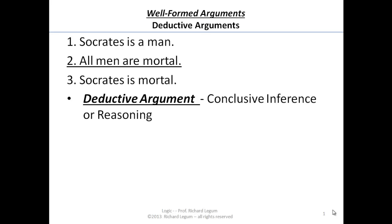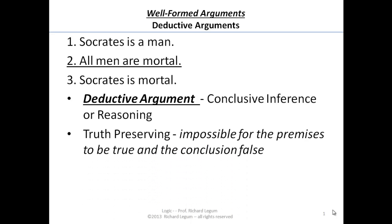Now, don't get confused by the fact that those two sentences happen to be factual. It doesn't matter if they're true or not true, if they're factual or not factual. We're talking about the conclusive connection between those two premises and that conclusion. What we say about a conclusive inference is that it's truth-preserving. What do we mean by truth-preserving? It is impossible for the premises to be true and the conclusion false. When you have a good deductive argument, good deductive logic, if you start with true premises, the conclusion is also going to be true.